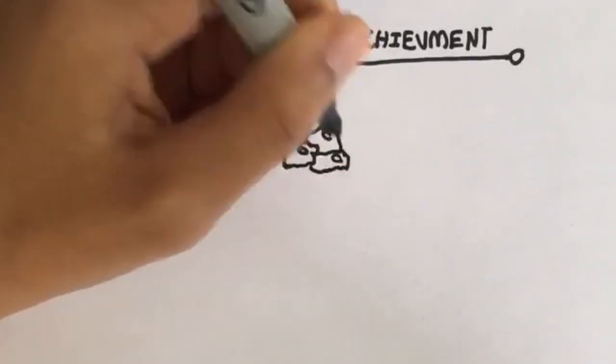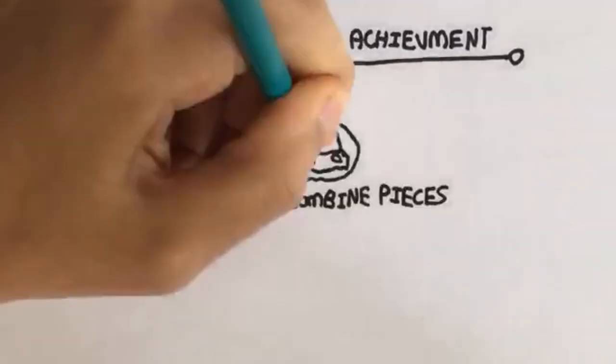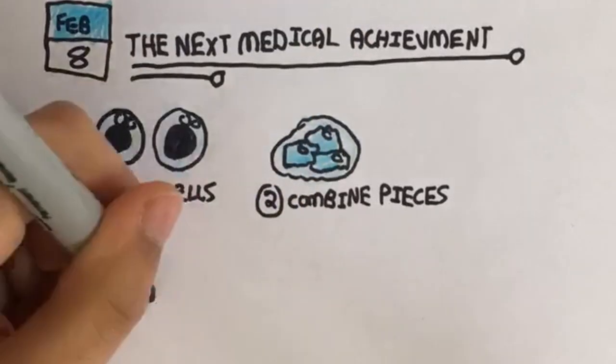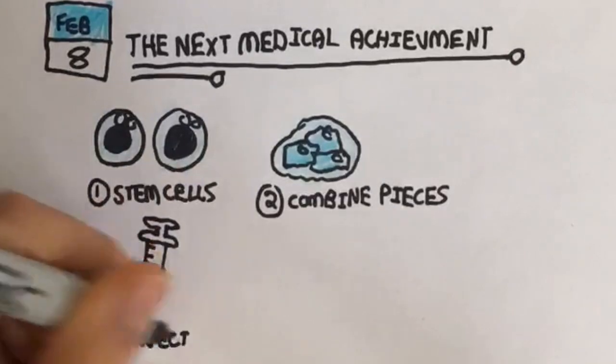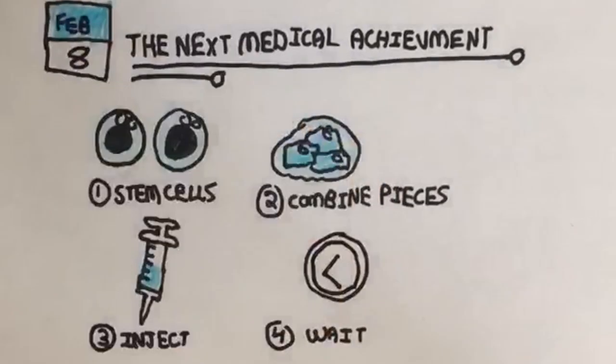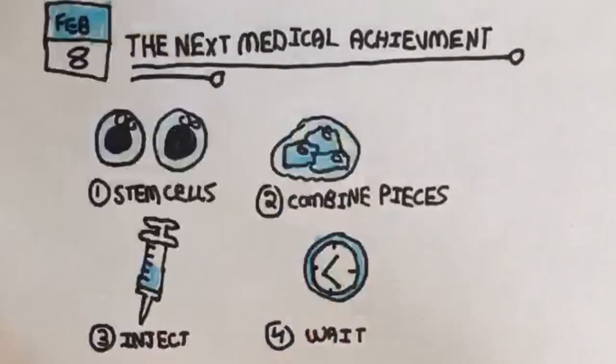They began with basic stem cells grown in a culture specifically designed for the development of a kidney, turning them into small pieces of the organ. These pieces were combined with a gel that functions similarly to connective tissue and were injected into the bodies of mice.